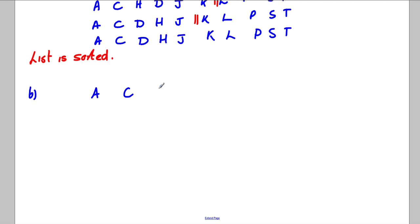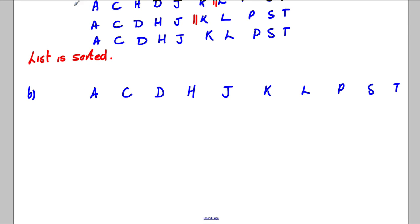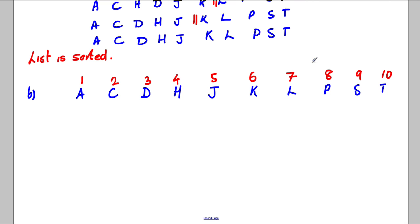So for part B, I'm going to write these out: A, C, D, H, J, K, L, P, S, and T. And with binary search you must have numbers in front of them because the computer recognizes the numbers. So above them I'm going to have one, two, three, four, five, six, seven, eight, nine, ten.